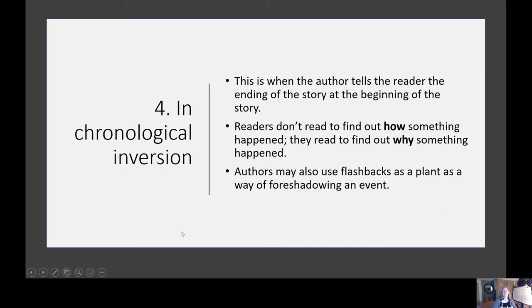The fourth example is chronological inversion — when the author tells the reader the ending of the story at the beginning. Readers don't read or view the piece to find out how something happened; we've already been told. They engage to find out why something happened. Another aspect of chronological inversion is the use of flashbacks as a plant to foreshadow an event. The best example is the prologue to 'The Secret History.'